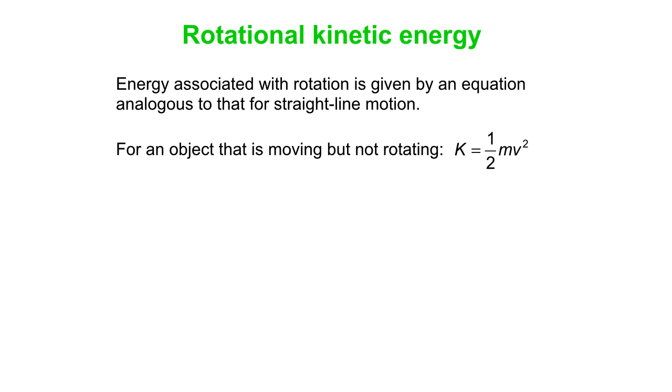So if you think about the straight line motion, we know this one. K is one half mv squared. That's an object that's moving but not rotating. What about an object that is rotating but not actually translating? So rotating only.